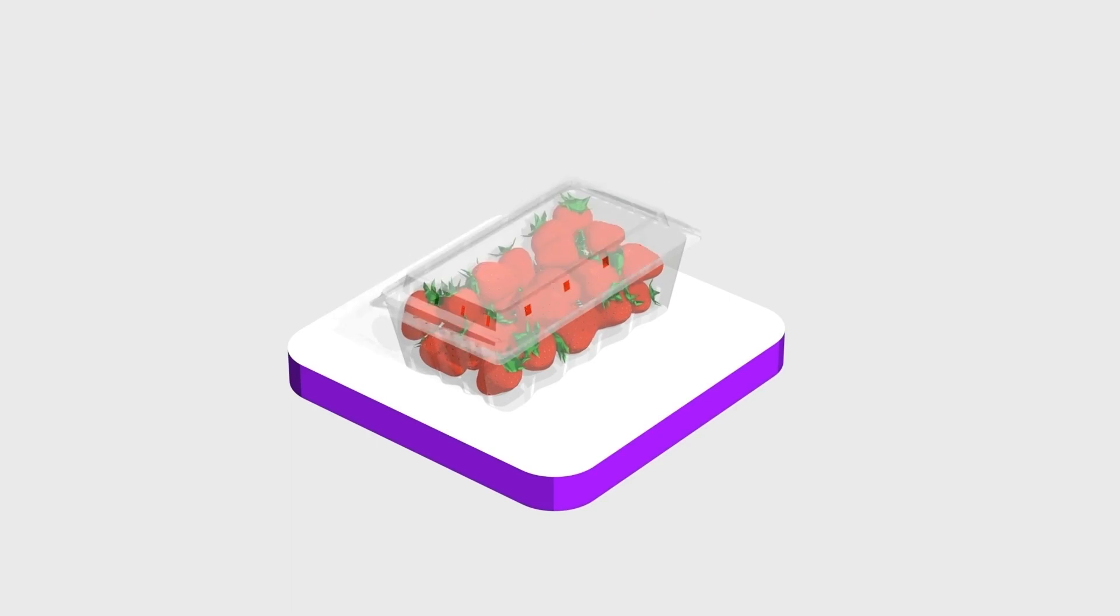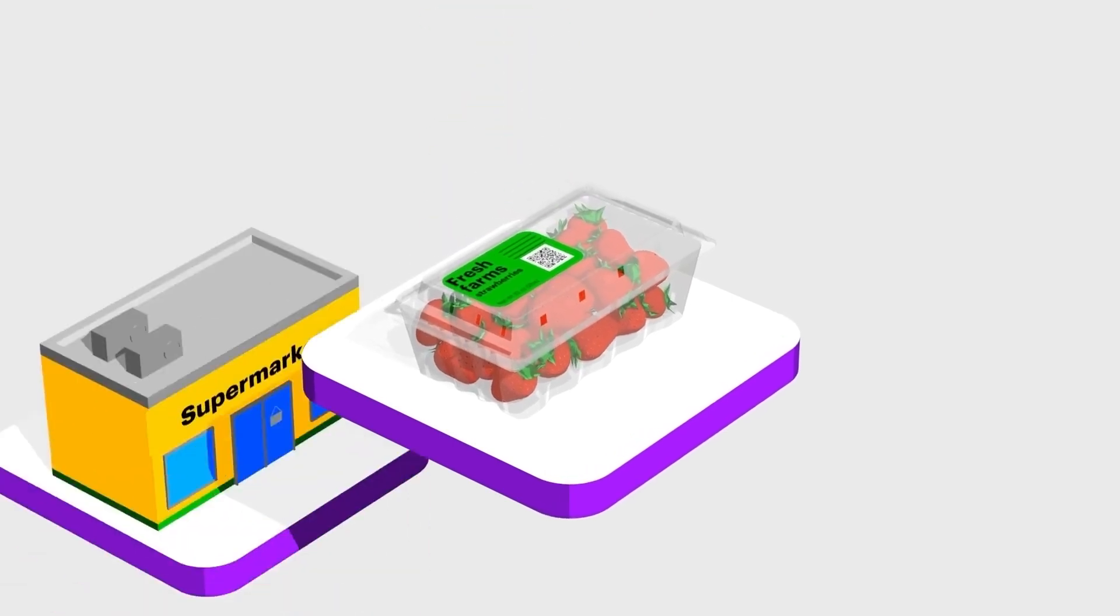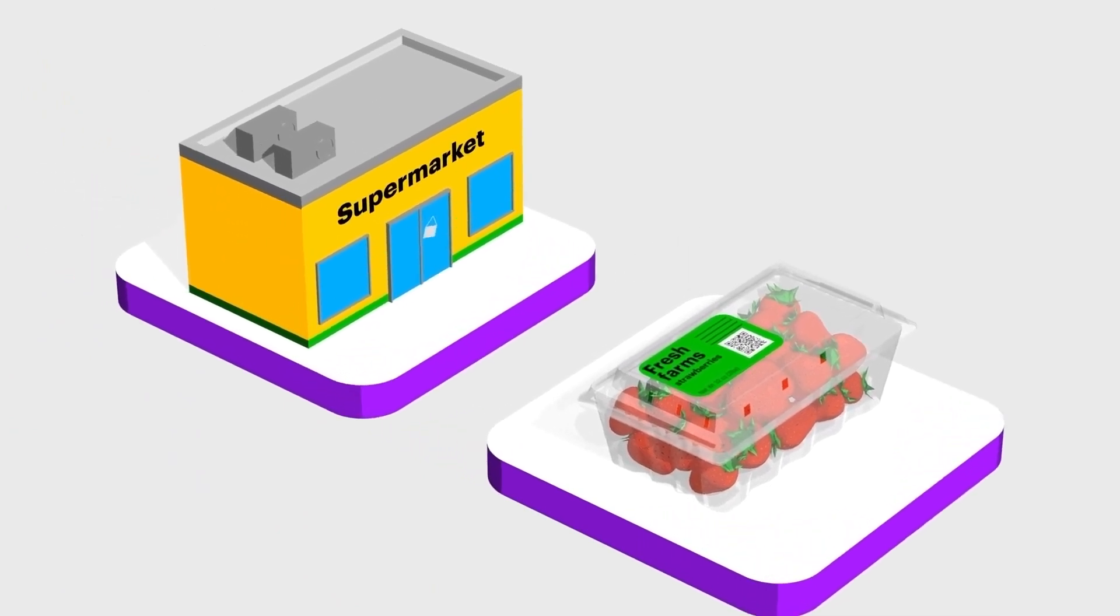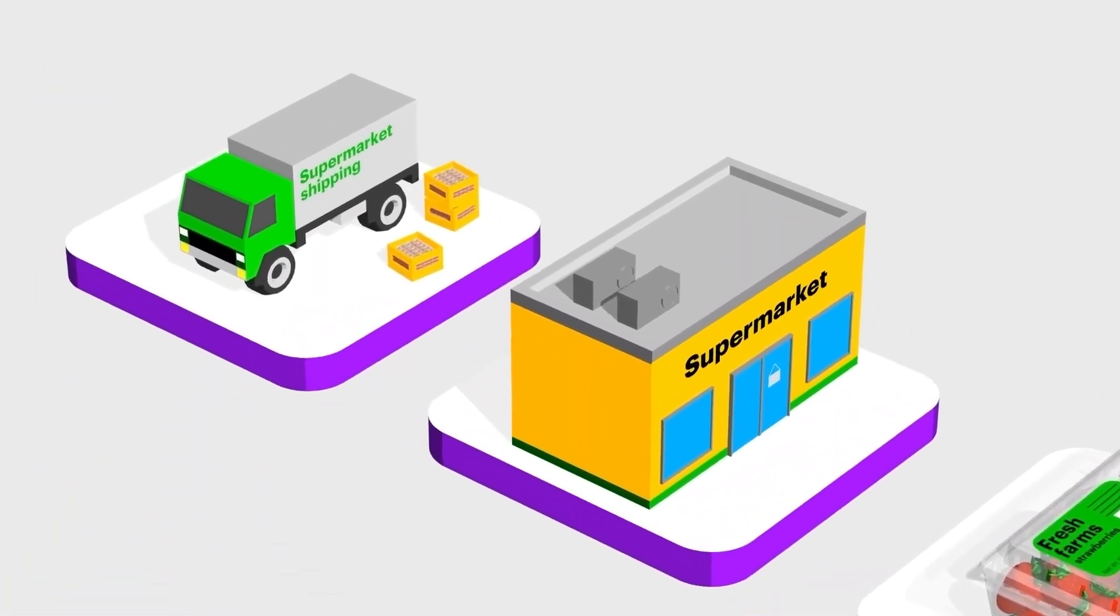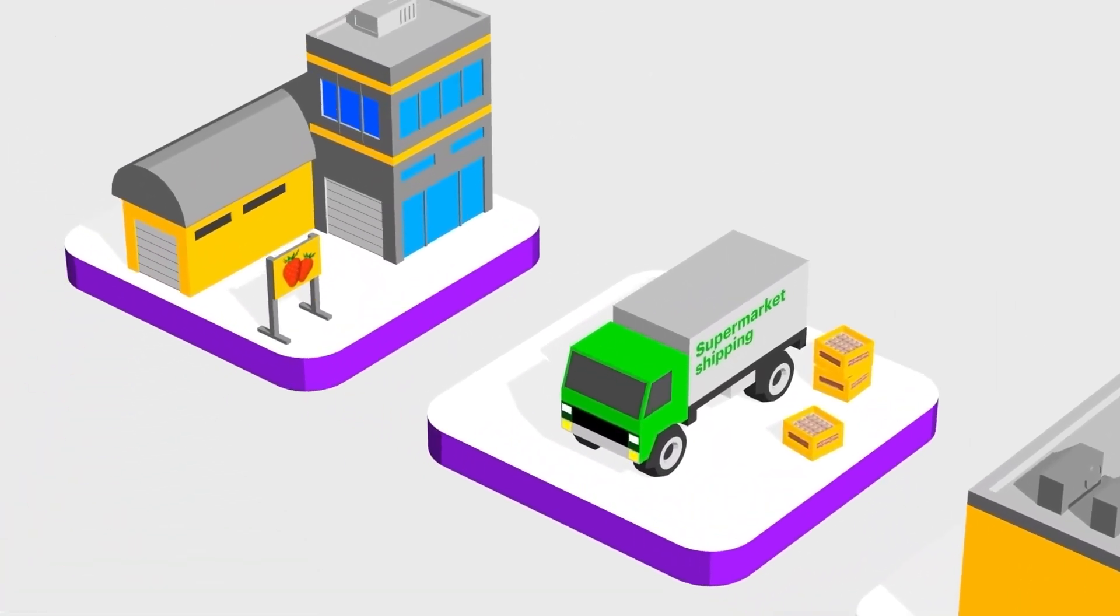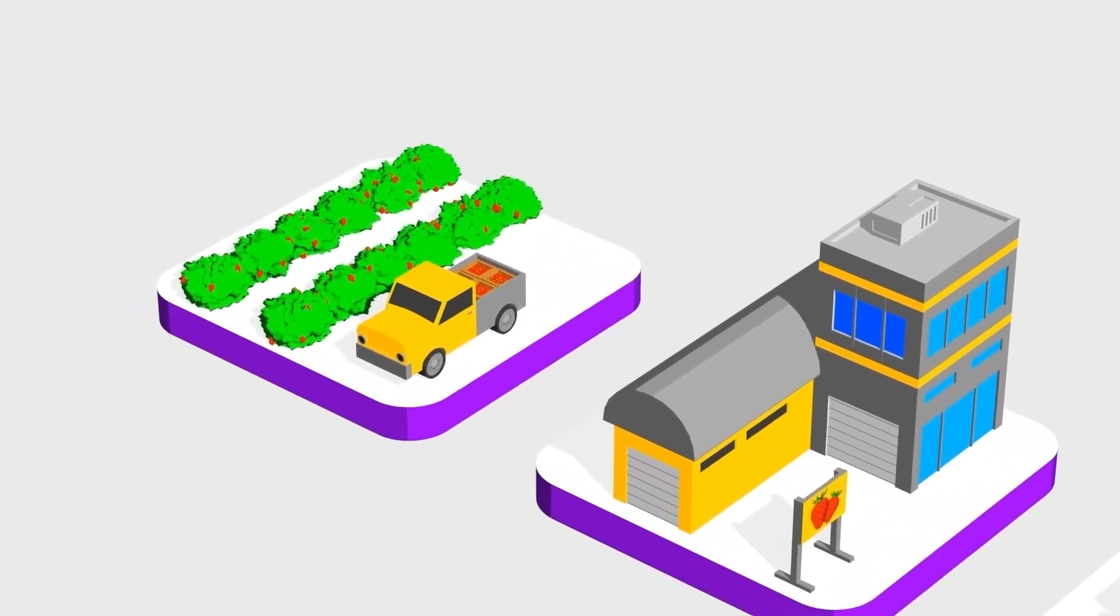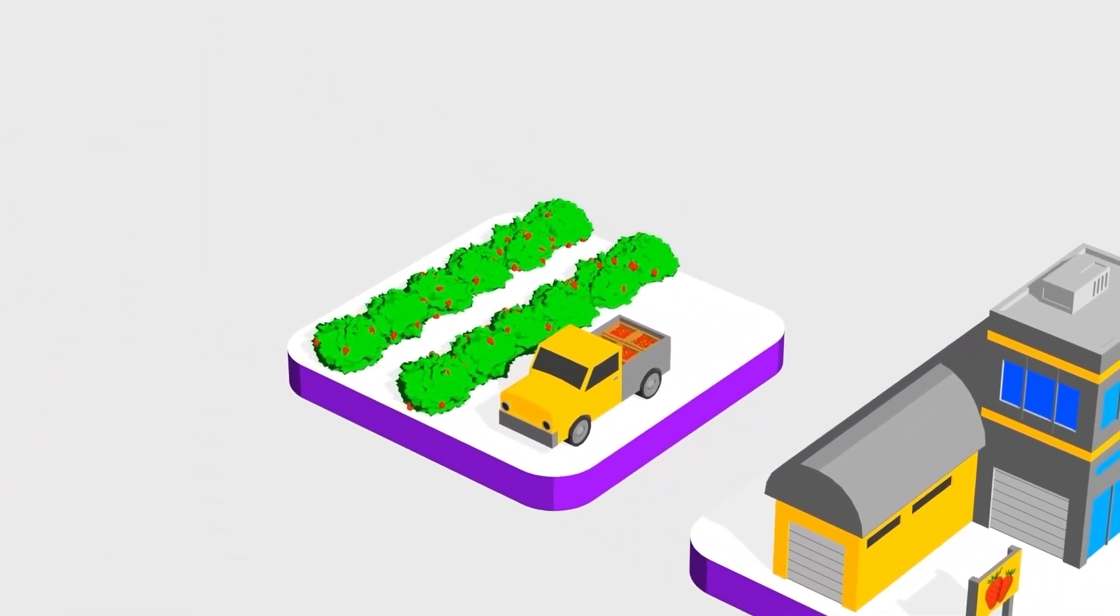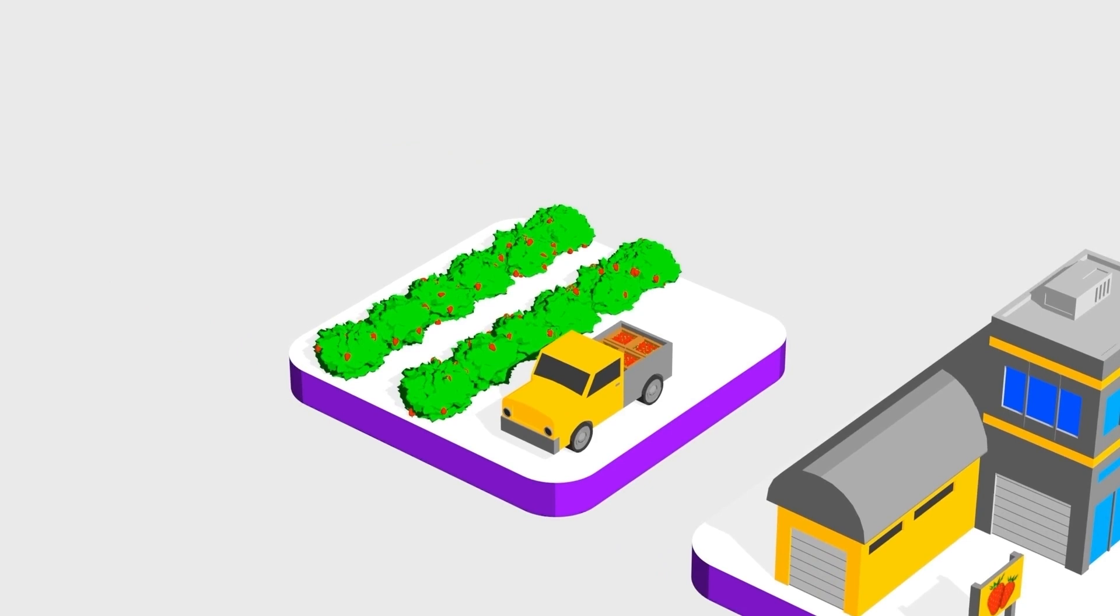In addition, a unique identifier on a carton of strawberries is all that is necessary to access the full history of how the strawberries arrived in the store. In the event of a recall on strawberries, the impacted products can be traced by scanning the affected crate barcode to track back to the originating farm.